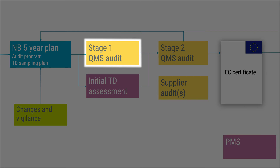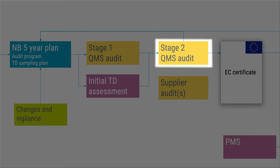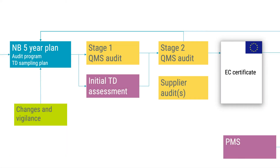The initial QMS audit is composed of a stage one audit where the notified body ensures that the manufacturer's QMS covers all applicable requirements of the MDR. The stage one audit duration is typically around 30 percent of the complete initial audit time. Based on the output of the stage one audit, the notified body decides when the stage two, or certification audit, can be conducted. But before the stage two audit is performed, the initial technical documentation assessment shall be reported to the client and also form input to the stage two audit.